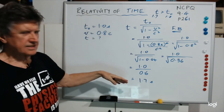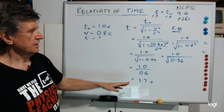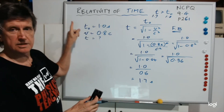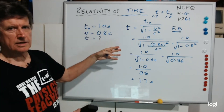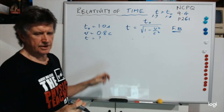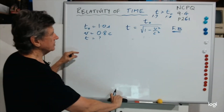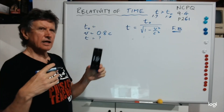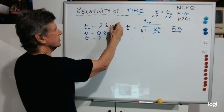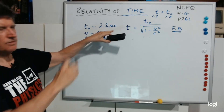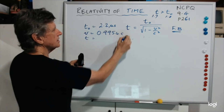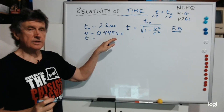Now let me just show you one last thing. If you remember back to the muon experiment — I told you that muons had a rest lifetime, which is a bit different to half-life, a rest lifetime of 2.2 microseconds. I told you at the time that scientists measured the speed of those muons going at about 0.9954C.